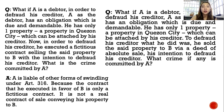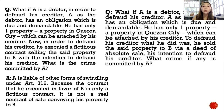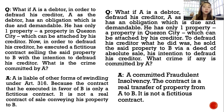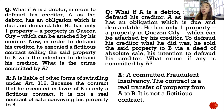Another problem: same facts — A is a debtor who, to defraud his creditor, actually sold the property to B via a real deed of absolute sale. What crime is committed? Is it still under Article 316? Here, it falls under Article 314 — fraudulent insolvency — because the sale to B is a real transfer of property from A to B; it is not a fictitious contract. If the contract is fictitious, it is Article 316. If the contract is real but intended to defraud, it is fraudulent insolvency under Article 314.